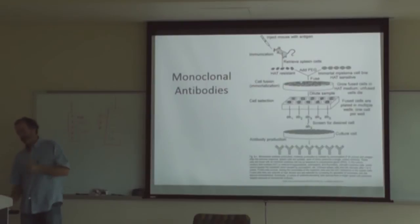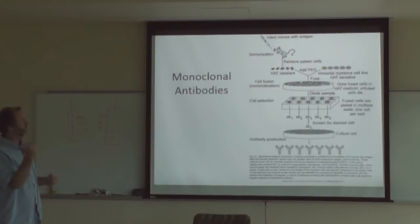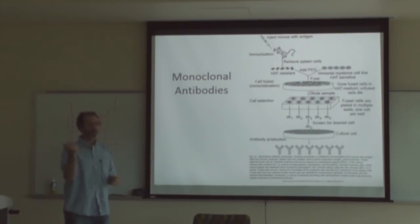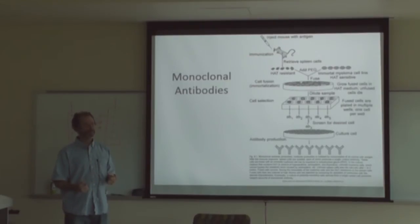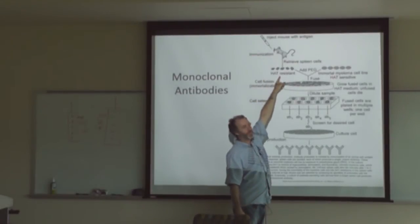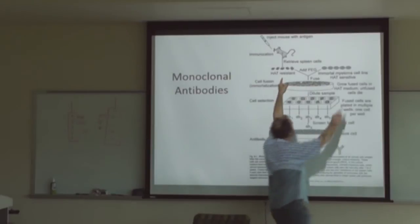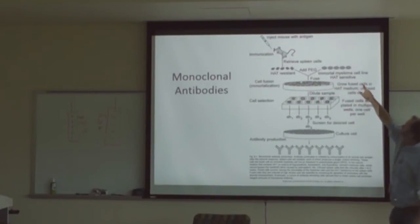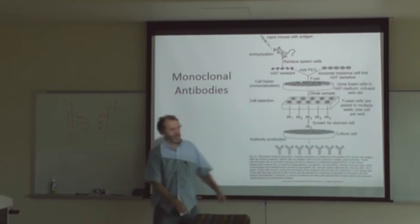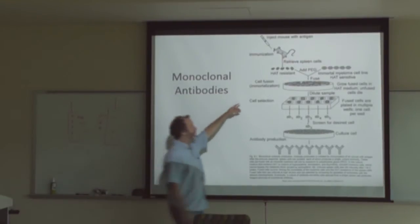Monoclonal antibodies are a whole different beast. You start off the same way — you immunize the mouse by injecting it with the antigen. But then you remove the mouse's spleen, retrieve the spleen cells, and fuse those spleen cells with an immortalized myeloma cell line that is sensitive to HAT. The retrieved spleen cells impart HAT resistance.